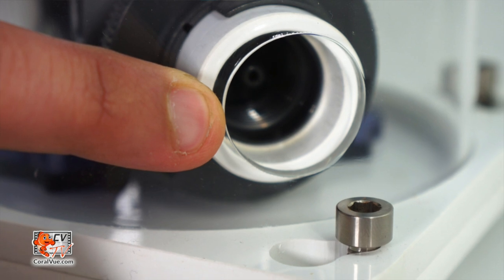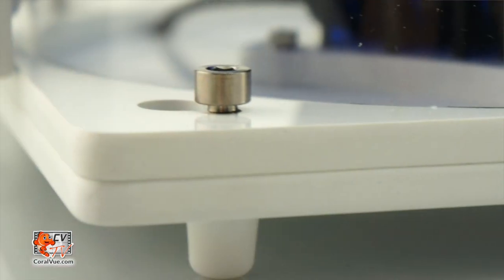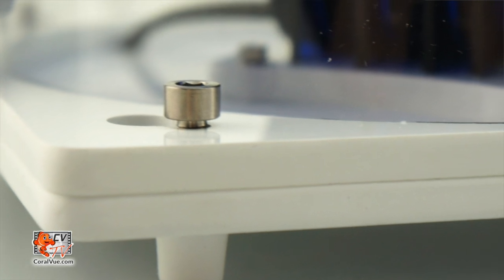Line up the skimmer body with the intake of the skimmer pump and match the screws on the base of the larger holes on the rim of the skimmer body. Twist so that the two rims line up making a perfect square.